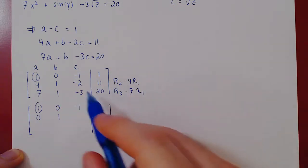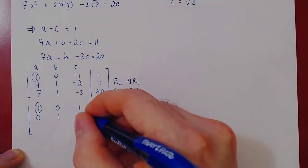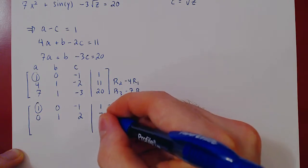Let's apply the first row operation. 0, 1, 2 minus 4 times negative 1 is negative 2 plus 4, which is positive 2. 11 minus 4 is positive 7.